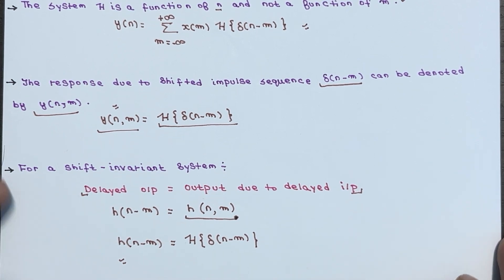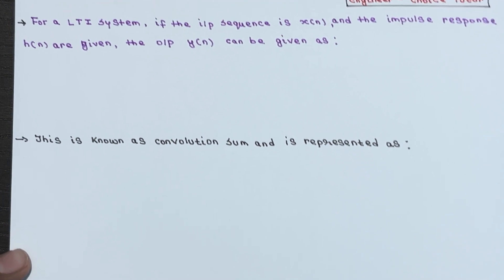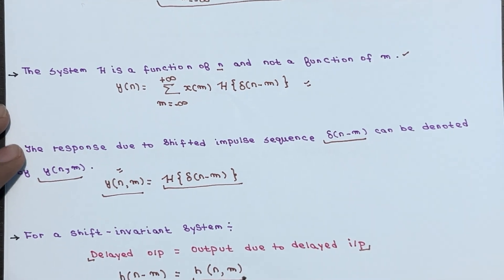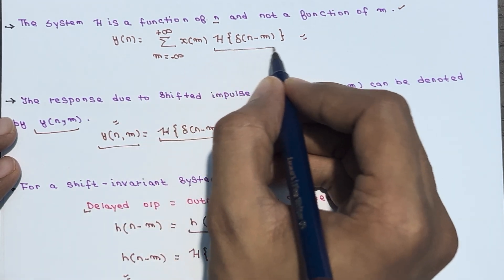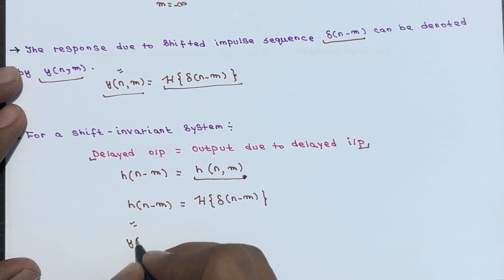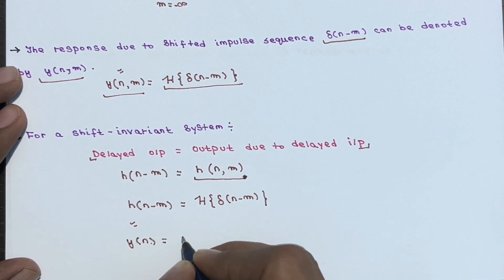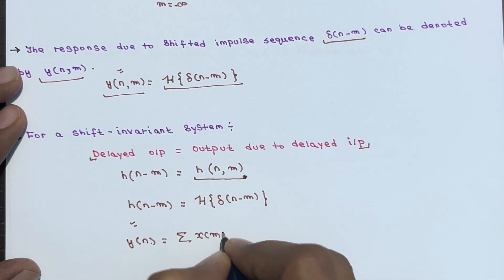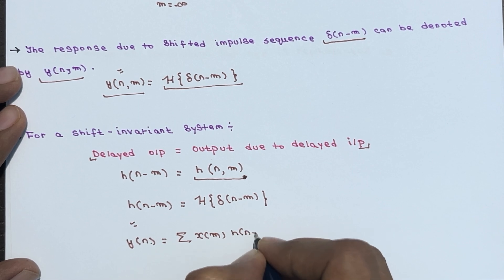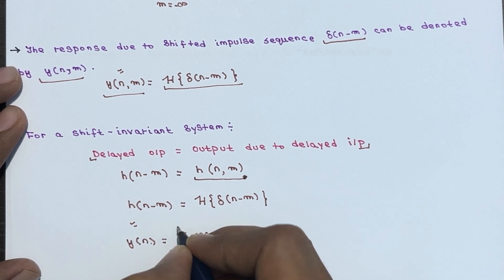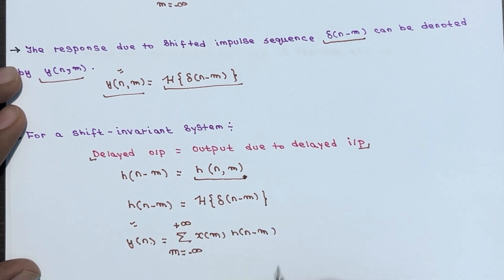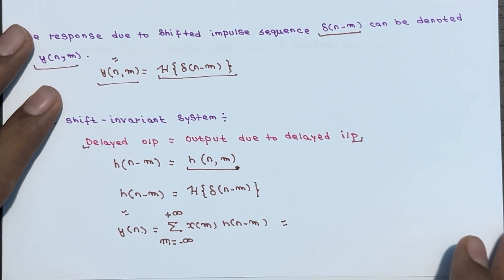Now substituting back into the final expression, the transform of δ(n−m) is replaced by H(n−m), giving us: y(n) = Σ x(m)·h(n−m), where m ranges from −∞ to +∞. This is the final expression for y(n).